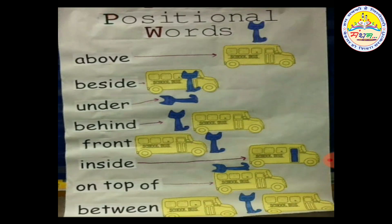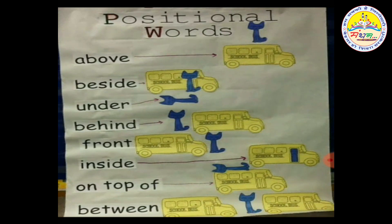In the third one, look — where is the cat? The cat is under the van, and the cat's position is below the van. In the fourth one, where is the cat? Behind. The cat is behind the van.